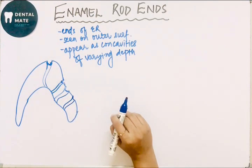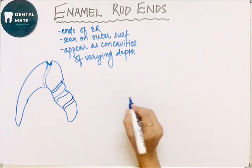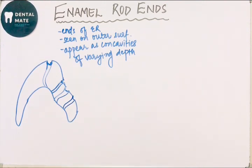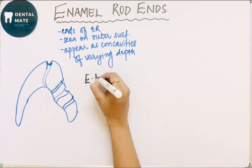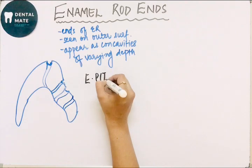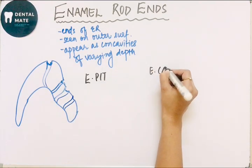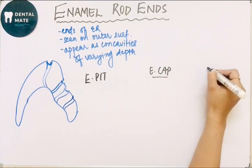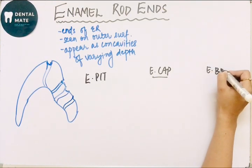In enamel rod ends, three types of different structures are seen: one is enamel pit, enamel cap, and enamel brooch.